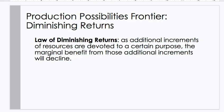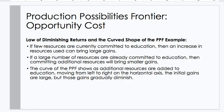Production possibilities frontier and diminishing returns. From the law of diminishing returns: as additional increments of resources are devoted to a certain purpose, the marginal benefit from those additional increments will decline — hence the law of increasing opportunity costs. If few resources are currently committed to education, an increase in resources used can bring large gains. But if a large number of resources are already committed to education, committing additional resources will bring smaller gains. The curve of the PPF shows that as additional resources are added to education, moving from left to right on the horizontal axis, the initial gains are large but gradually diminish.